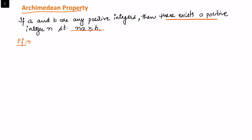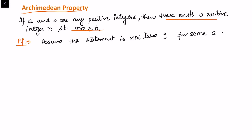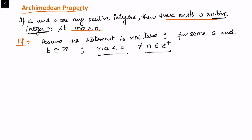To prove the Archimedean Property, I'll take it on the counter side and assume that the statement is not true. So for some positive integers a and b considered in the statement, what I assume is that na is strictly less than b for every positive integer n. That means the statement is not true. So now, once we have considered this case, let us construct a set S.